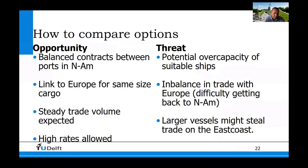To continue with the example: the opportunities were a balanced contract between ports in North America, a link to Europe for the same cargo size, steady trade volume expected, and high rates seen so far. The potential threats are overcapacity of suitable ships — capacity for 50 contracts in the market but only 20 available — a trade imbalance with Europe making it harder to return to North America, and the risk that larger-than-Panamax vessels might steal some trade if they relocate to the Atlantic side.